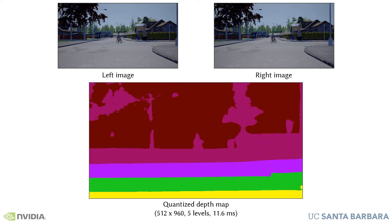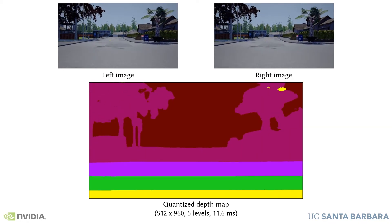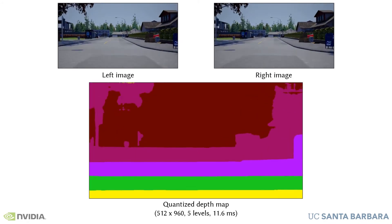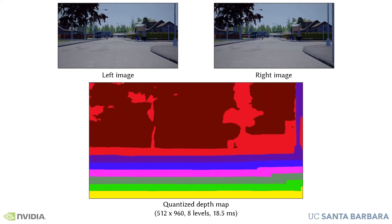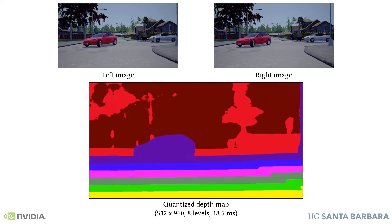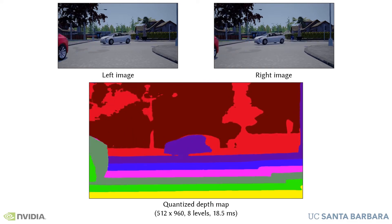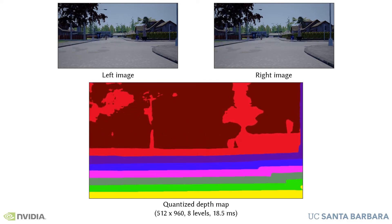With a larger computational budget, we can estimate a highly quantized depth — five levels in this example — without sacrificing spatial resolution. The complexity grows linearly with the number of quantization levels, so we can easily increase the accuracy to, say, eight levels as shown here.